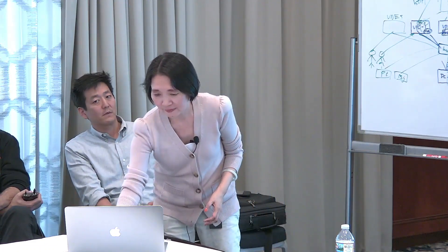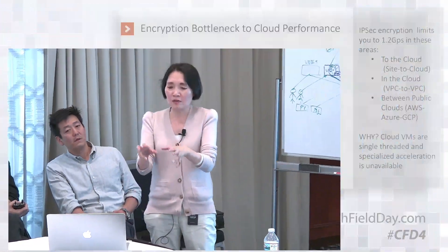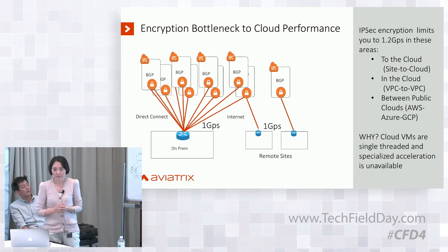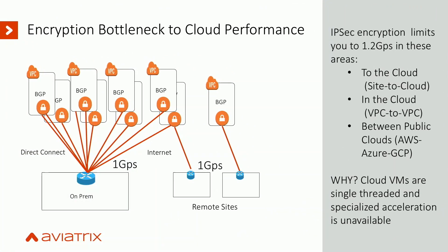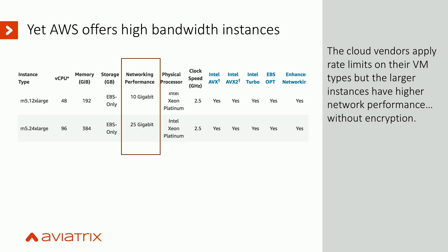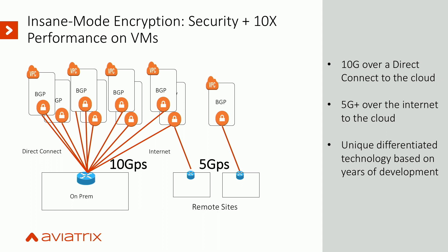Let me zoom in on the performance part. It's an industry benchmark that throughput is one gig no matter how many CPUs you throw at it. For example, AWS offers the m5.24xlarge — 96 core CPU — it does 25 gig, but if you put it to run IPsec you will get 1.25 gig. Why? The problem is today's software-based encryption can only leverage a single core. It doesn't matter how many cores you have — that is the bottleneck.